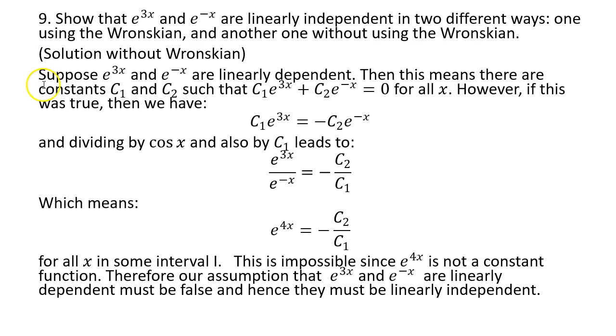So even though the solution not using the Wronskian is longer, I would ask students to know how to do this. Here's the solution without using the Wronskian. Suppose we try to prove by contradiction - we suppose that the two functions are linearly dependent. What does that mean? That means there's a c1 and c2, not both of them zero, at least one of them not zero, which will satisfy this for all values of x in an open interval.